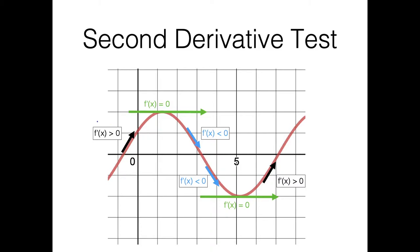We noticed that to the left of the maximum, the first derivative was positive, and to the right it was negative. For the min it was just the opposite — to the left it was negative, and to the right it was positive. So that sign switch is what we used for the first derivative test.